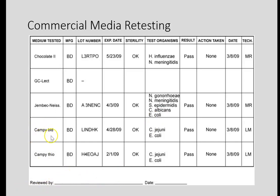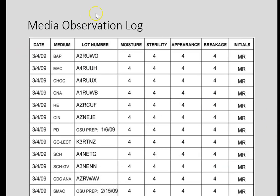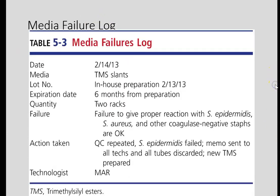Campylobacter jejuni is an intestinal bacterium that has to grow in specific environments — weird atmospheric conditions — and also grows at a very high temperature. It grows at 42 degrees Celsius, which is higher than body temperature. You have to make sure it does what it's supposed to do. If a failure happens and it failed to do what was supposed to happen, then what do you do about it? You get rid of it, or you try and fix it. If you can't fix it, you just throw it away.